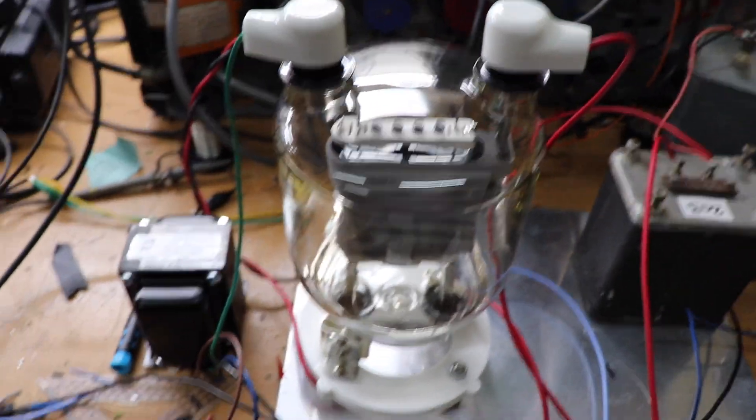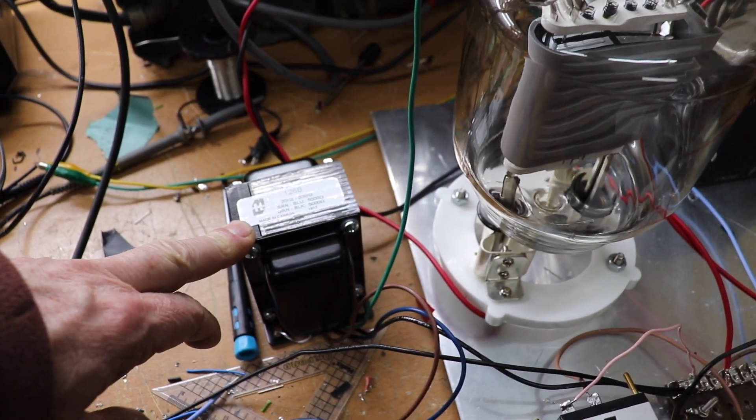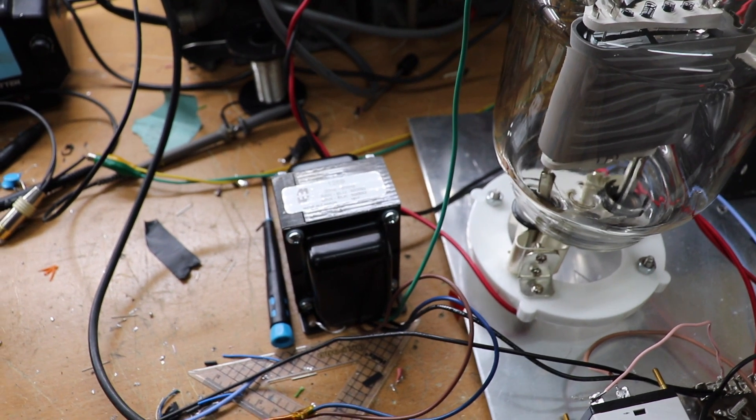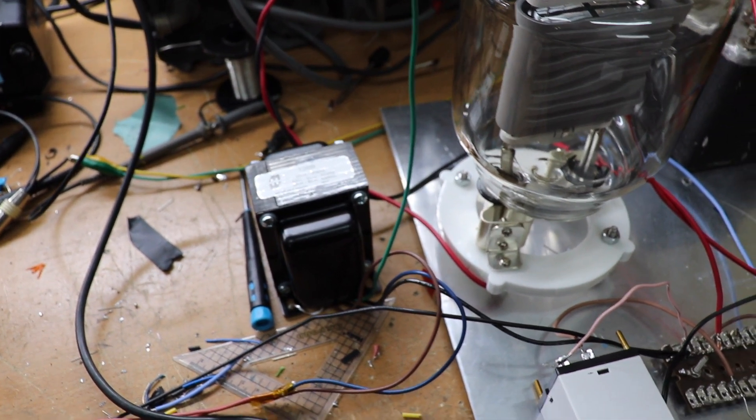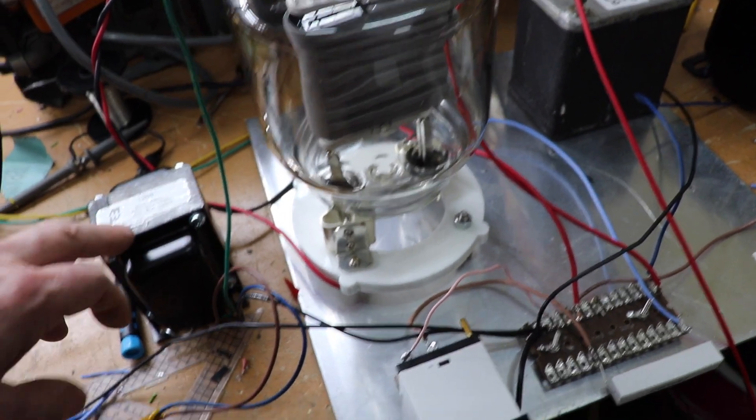And then moving back we have an interstage transformer which is a Hammond 126B. So it's 5,000 ohms to 5,000 ohms one to one and that's basically driving the grid of this tube which the other side this transformer is connected to earth.